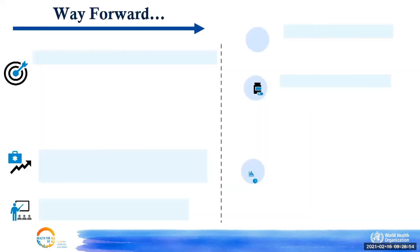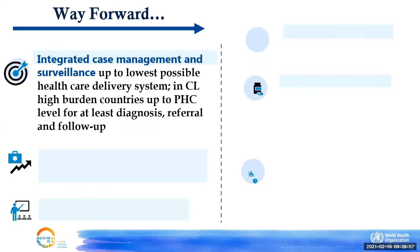How can we address these challenges? To improve surveillance and accessibility to case management, it is very important that case management and surveillance are integrated down to the lowest possible level of the healthcare system — at least to the primary healthcare level in highly endemic areas. If we can integrate case management at the primary healthcare level, that will be a very good option to tackle the disease.